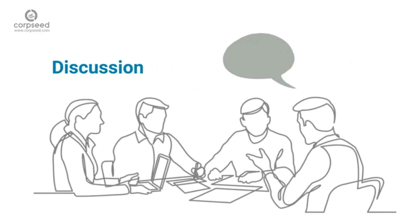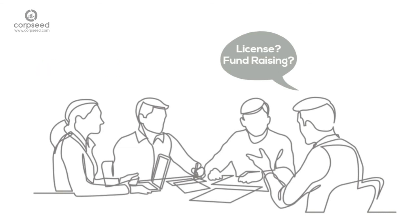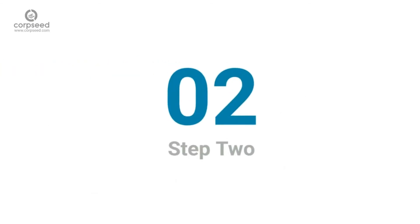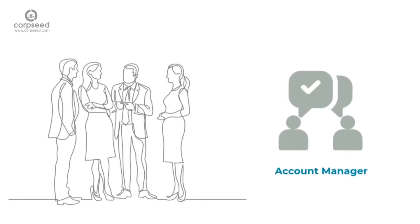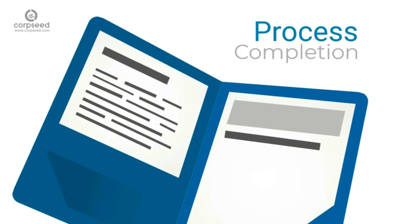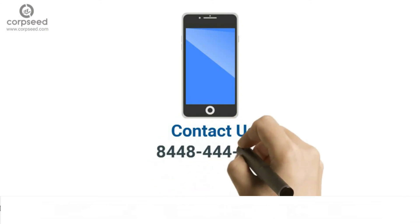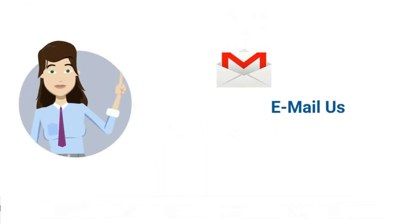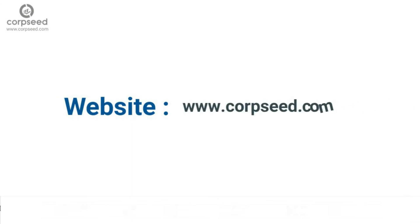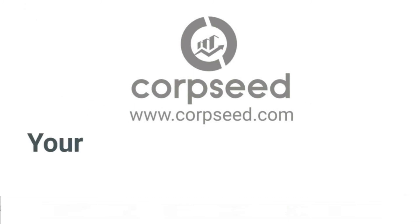It's a three easy steps process. Step 1: Connect with Team Corpseed to discuss specific requirements for your business — most customers take 20-25 minutes to discuss their needs and get instant solutions. Step 2: Once you discuss the requirement, a dedicated account manager will be aligned to assist you through the entire process. Step 3: Once the job is completed, you will receive documents directly to your email ID and at your doorstep, along with a 30-day payback guarantee. Reach us at 8448-444-985, email us at hello@corpseed.com, or visit www.corpseed.com. Corpseed — your business growth partner.